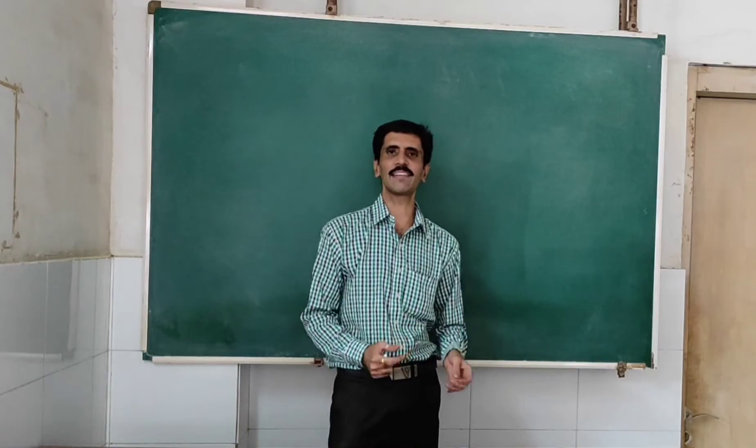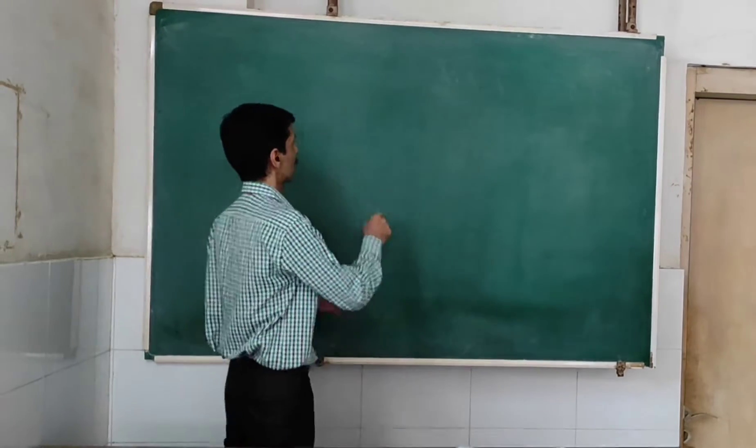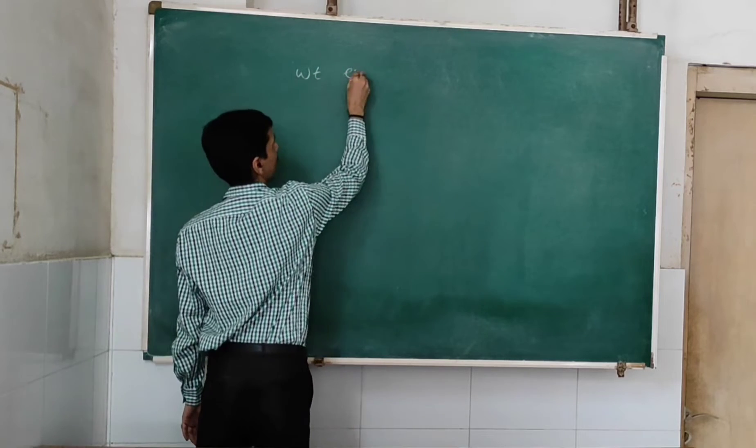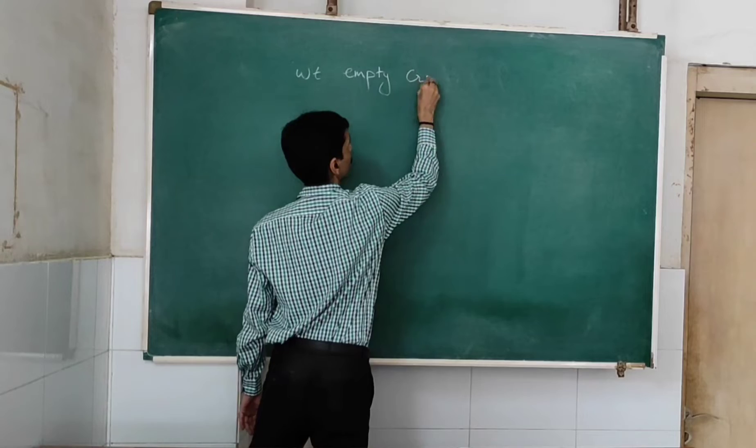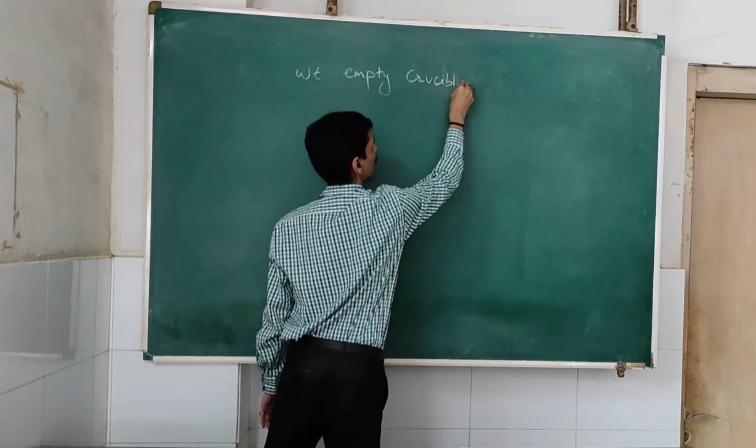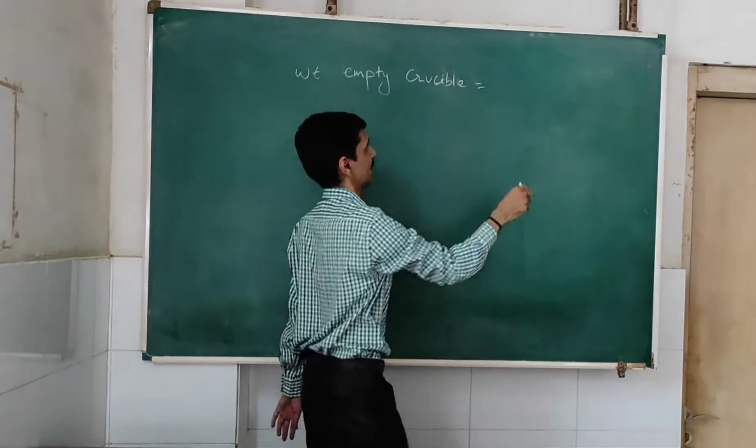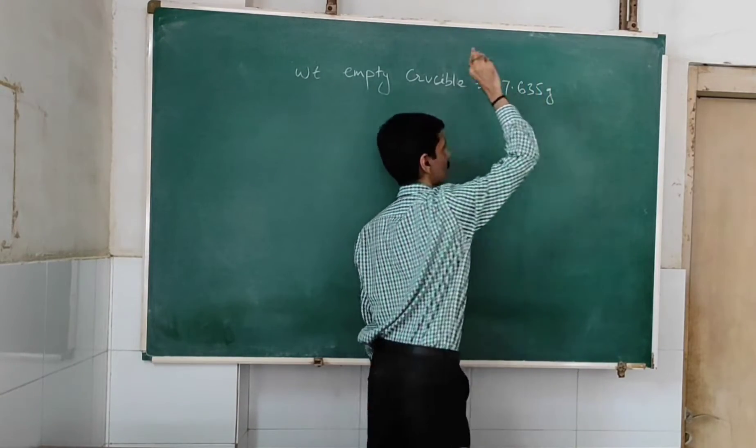Now my dear friends I will show you calculation of this entire experiment. First thing is, weight of the empty crucible. How much was it? 17.635 grams.